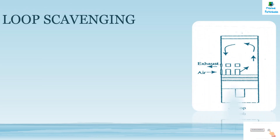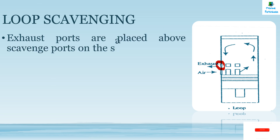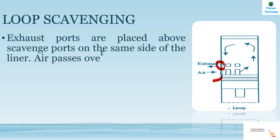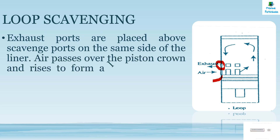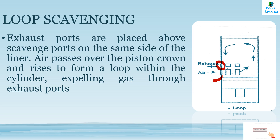Loop scavenging: here in the diagram we can see that the exhaust ports are placed just above the scavenged ports on the same side of the liner. The air passes over the piston crown and rises to form a loop within the cylinder, expelling gas through the exhaust ports.